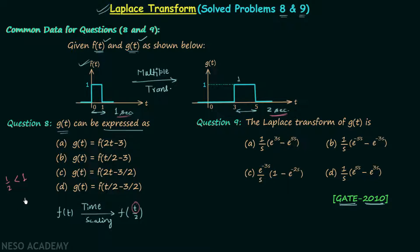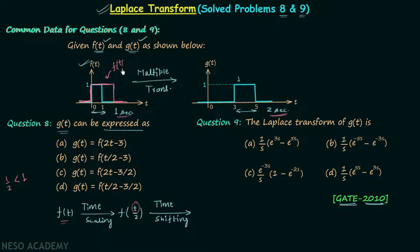I have explained all these points in detail in the initial lectures of this course. Now we move to the next step: performing the time shifting operation. After performing the time scaling operation on f(t), we have the waveform of f(t/2). We want g(t), so it is important to shift this waveform towards the right by 3 units. Therefore we will have f(1/2 · t − 3).